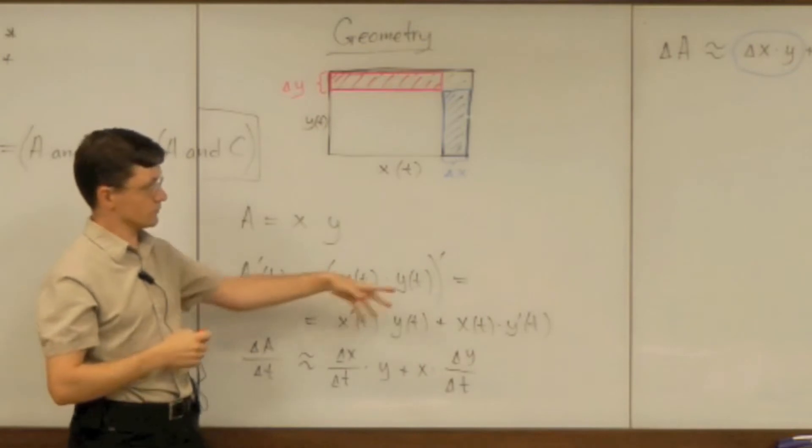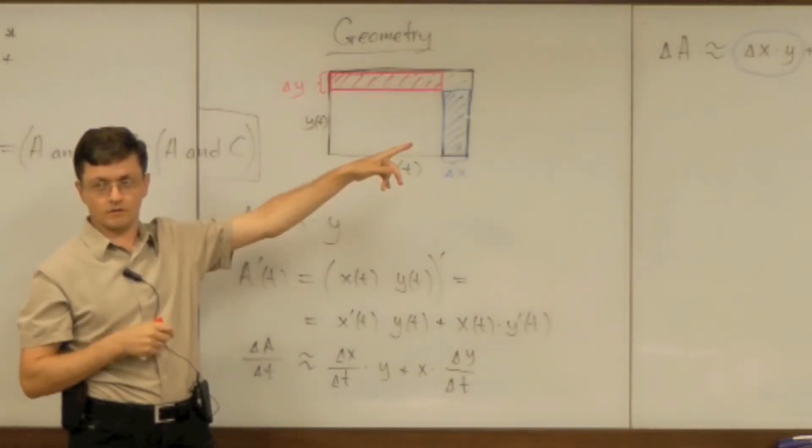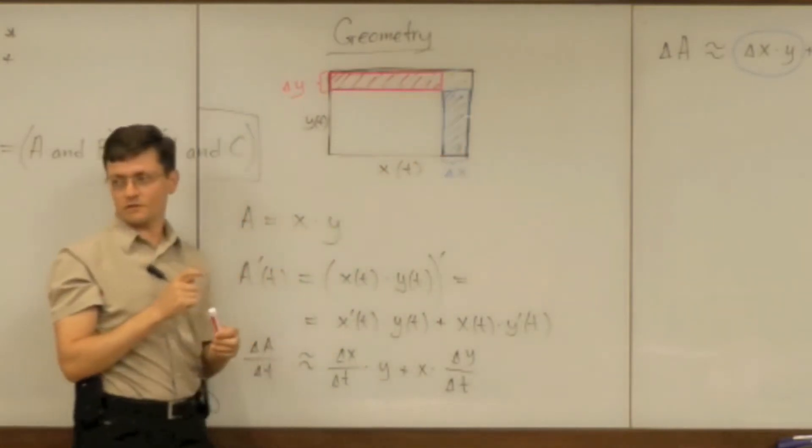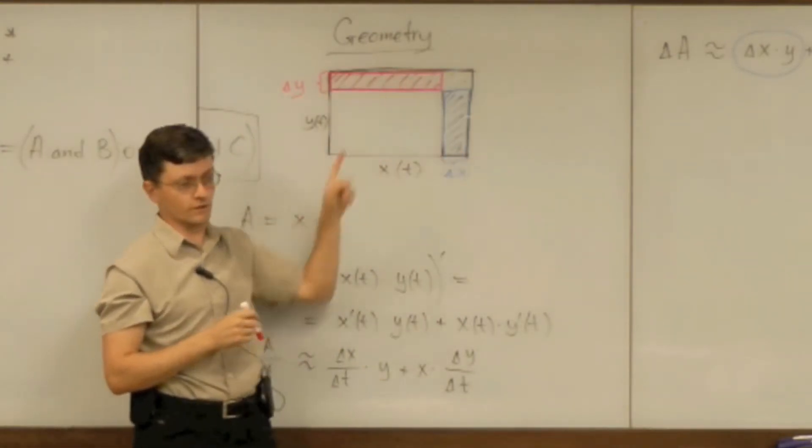And what the product rule says approximately is that the change of area is approximately equal to the sum of these two rectangles.